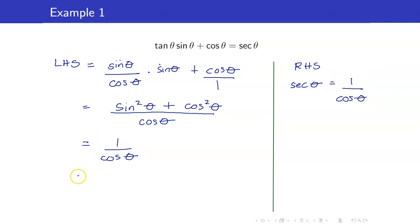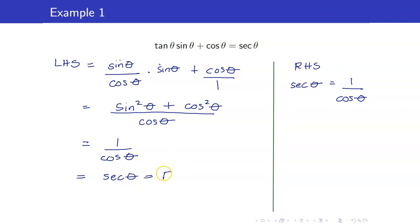Or if you want, for the proof itself, you can go back up. So from here, 1 over cosine theta is equal to secant theta, and secant theta is your right-hand side. So this would be the proof. You started with the left-hand side and you ended up with your right-hand side.